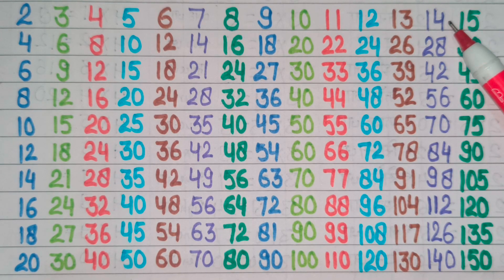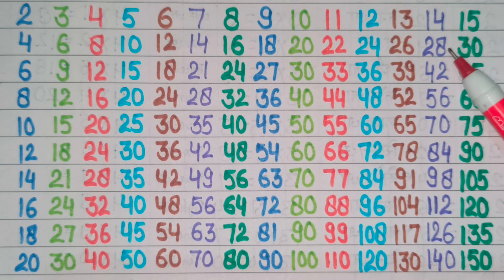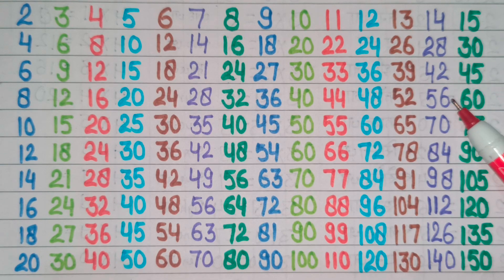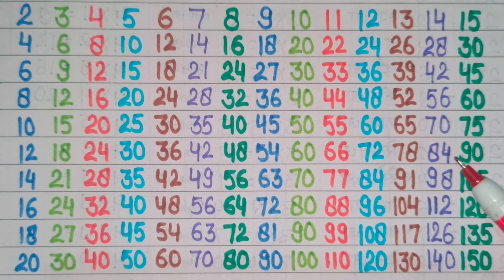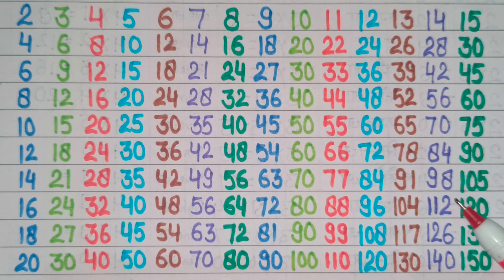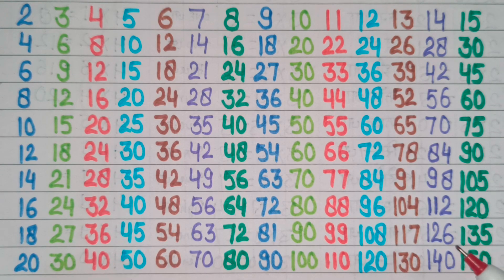14 times 1 is 14, 14 times 2 is 28, 14 times 3 is 42, 14 times 4 is 56, 14 times 5 is 70, 14 times 6 is 84, 14 times 7 is 98, 14 times 8 is 112, 14 times 9 is 126, 14 times 10 is 140.